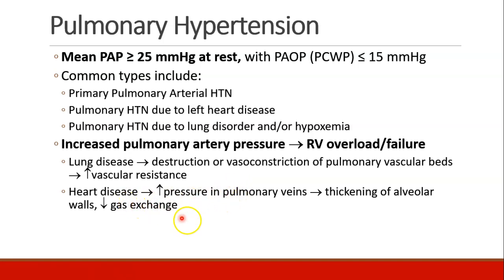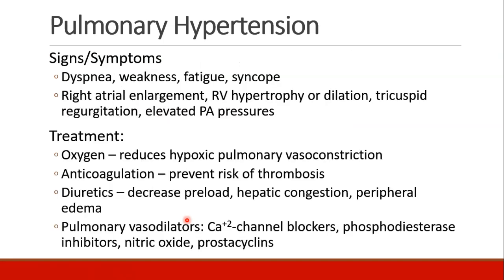If patients have left heart disease, this creates increased pressure in the pulmonary veins leading to the left atrium, which leads to thickening of the alveolar walls and decreased gas exchange. Patients with pulmonary hypertension may experience dyspnea, weakness, fatigue, or syncope. As pressures transmit to the right heart, patients can develop right atrial enlargement, right ventricular hypertrophy or dilation. The right ventricle can become so dilated that the tricuspid valve starts to regurgitate into the right atrium, and they will have elevated pulmonary artery pressures.